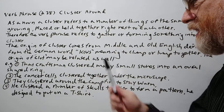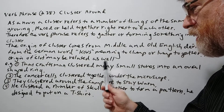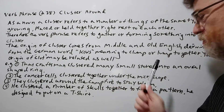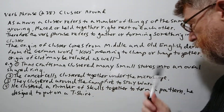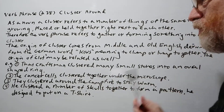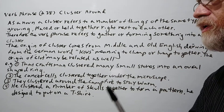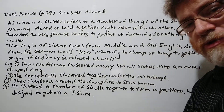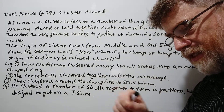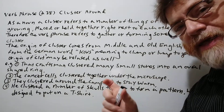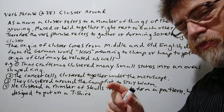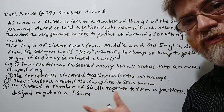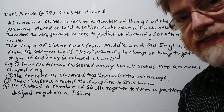Example number one: 'The craftsman clustered many small stones into an oval-shaped ring.' So he's putting a lot of little stones together into a pretty shape for a nice design.